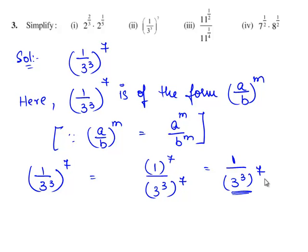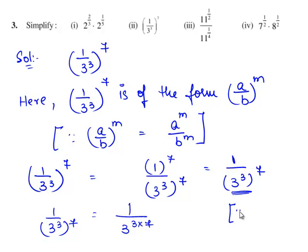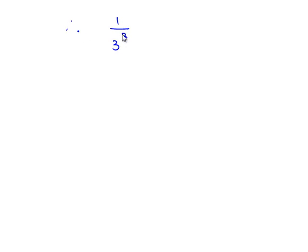When a power is raised to a power, we multiply the exponents. Therefore, 1 by 3 raised to the power of 3 whole raised to the power of 7 can be written as 1 by 3 raised to the power of 3 times 7, since a power m whole power n is written as a power m times n. So 3 times 7 equals 21, giving us 1 by 3 power 21.